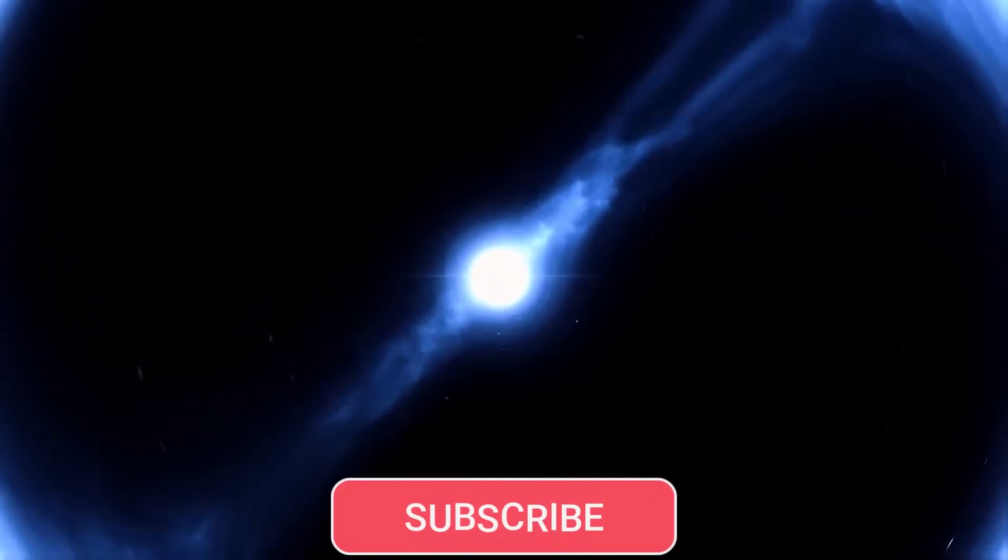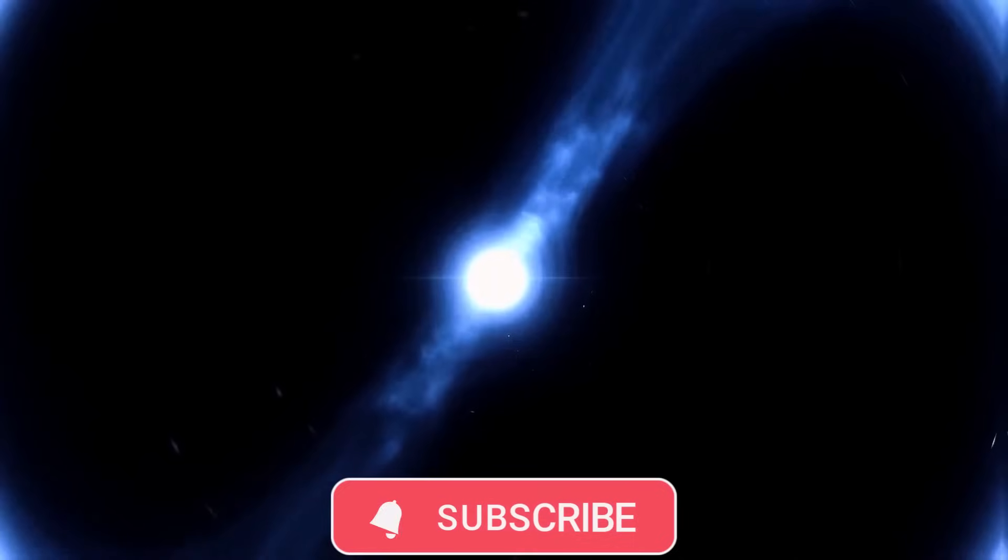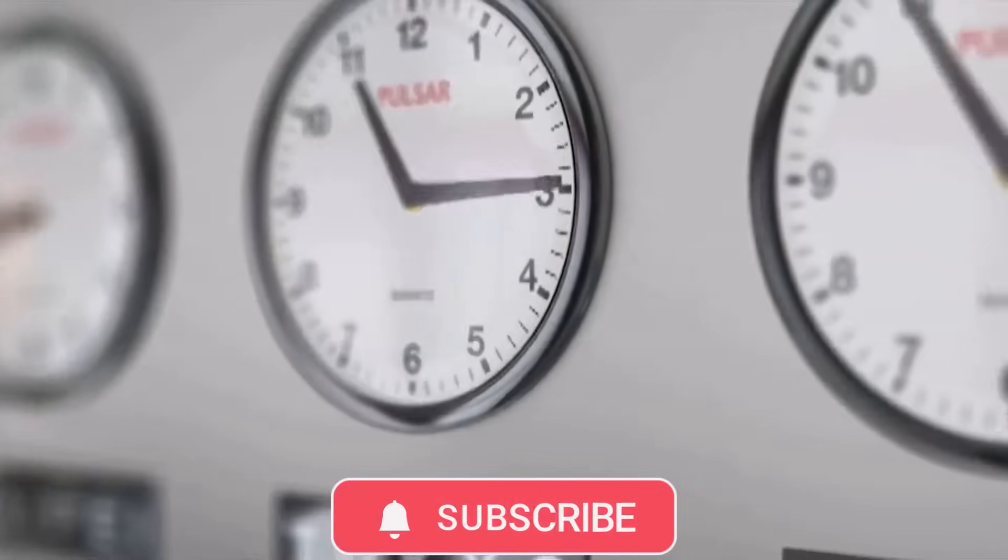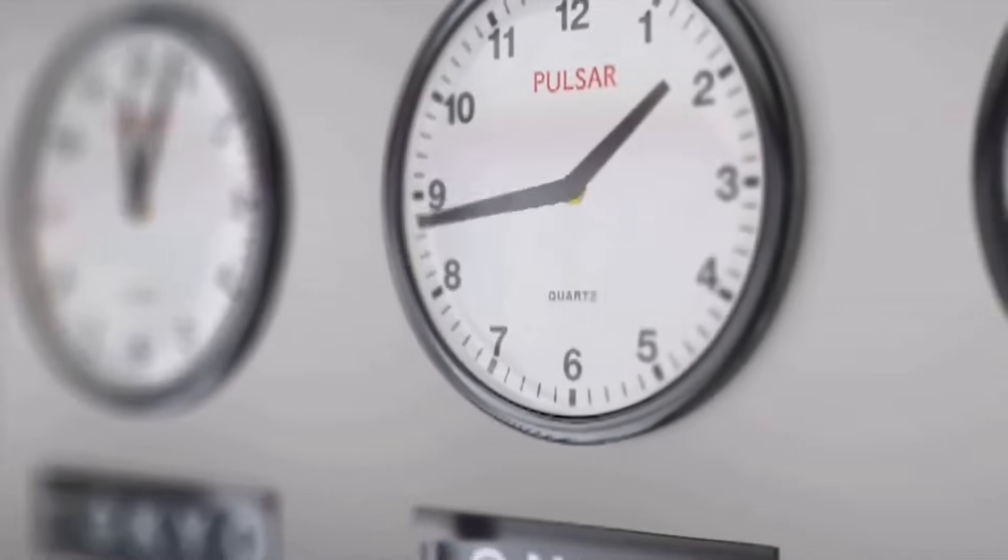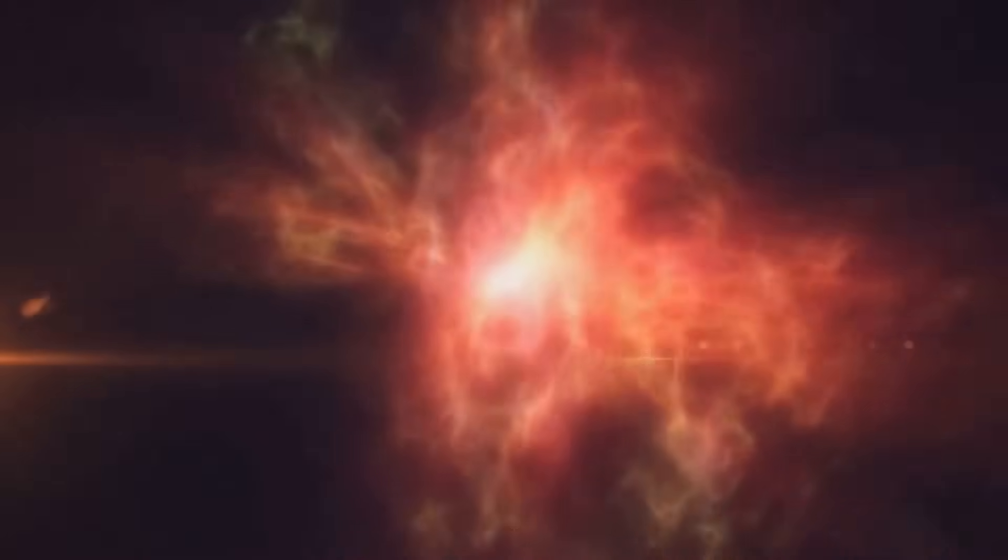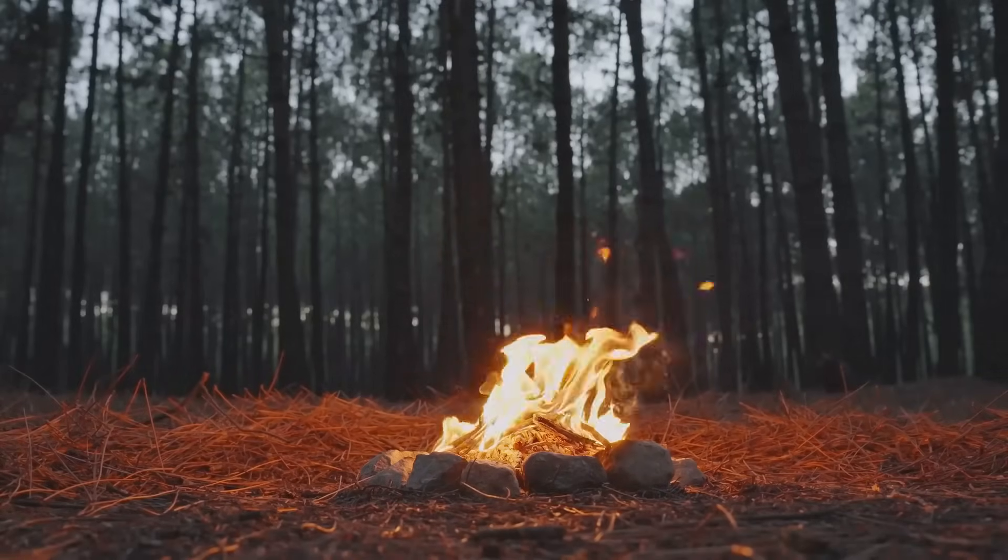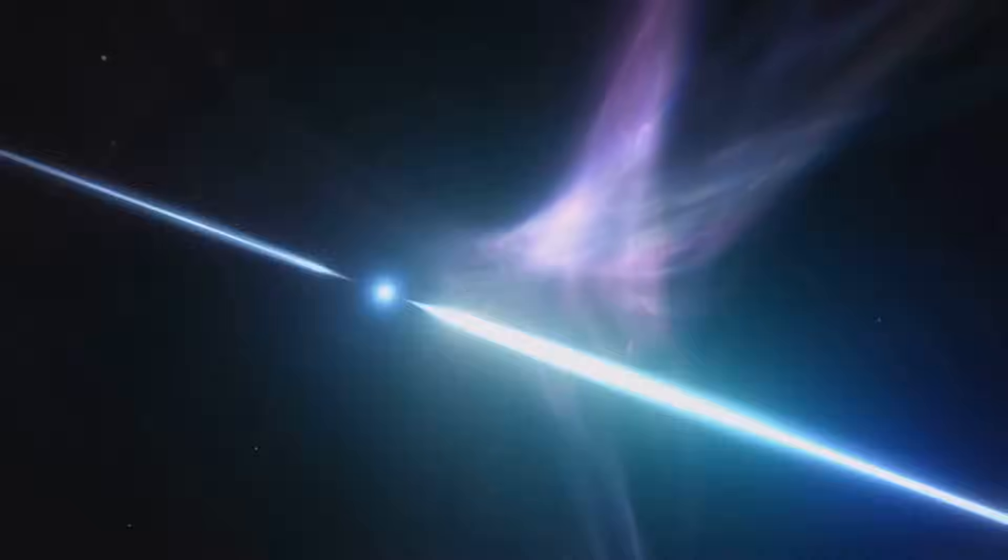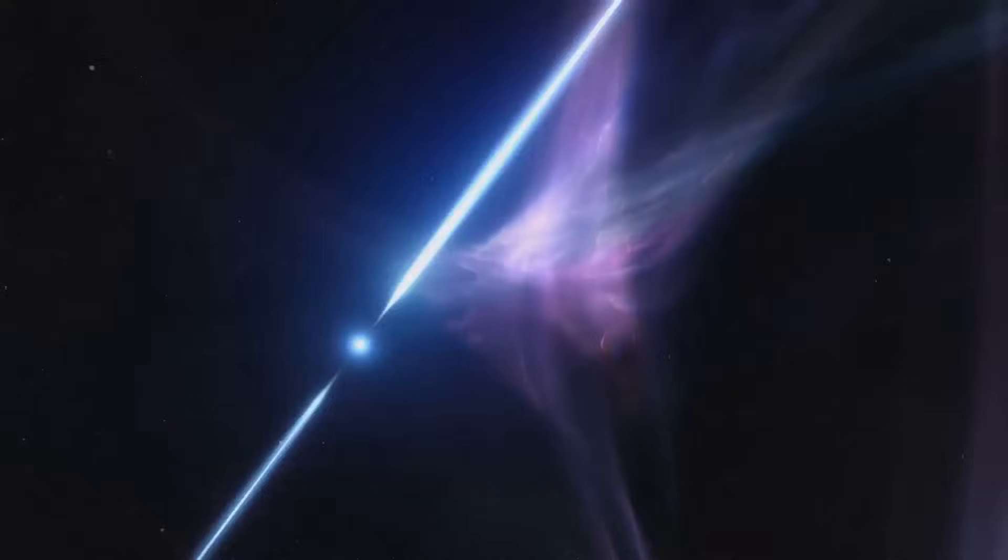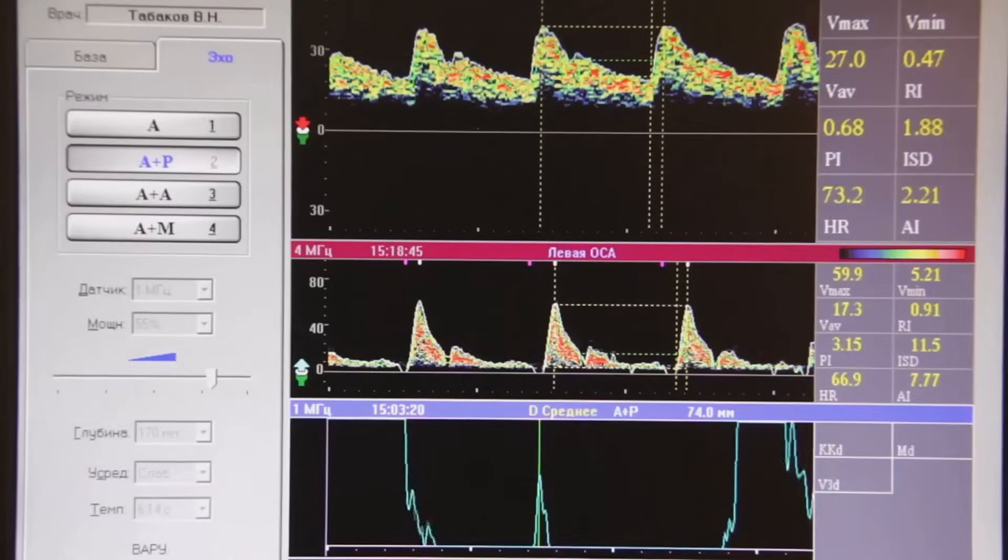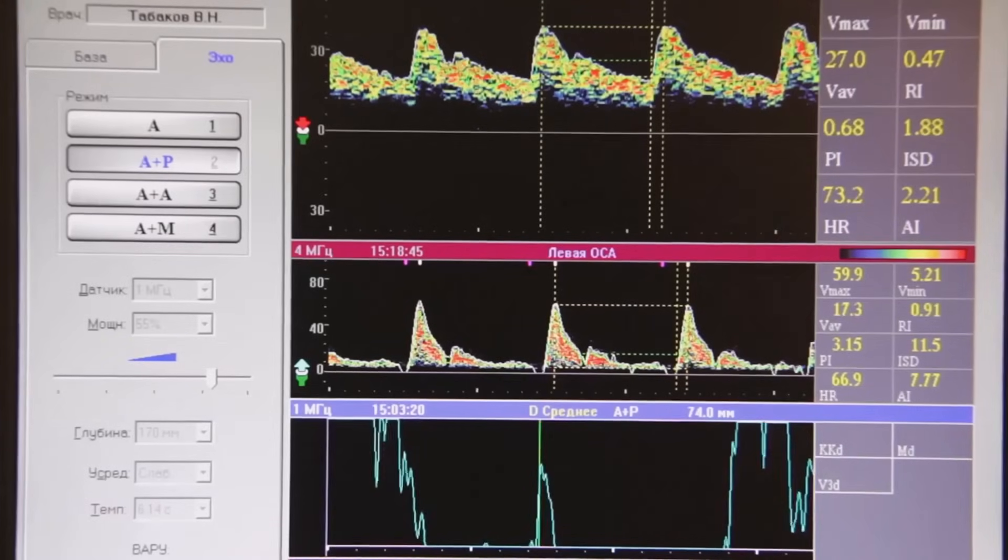According to our current models, something spinning this slowly shouldn't emit radio waves at all. It's well below the so-called neutron star death line, yet here it is, pulsing brightly. It's like finding a campfire still burning when there's no more wood. This star behaves like a pulsar or a magnetar, but it spins far too slowly. It breaks the rules. And that's what makes it extraordinary.